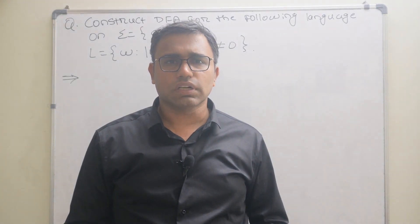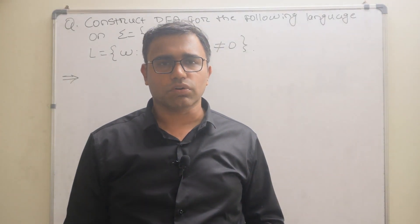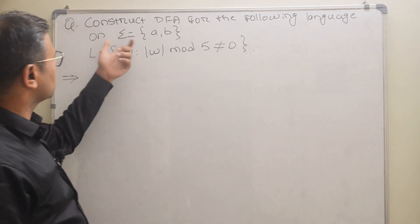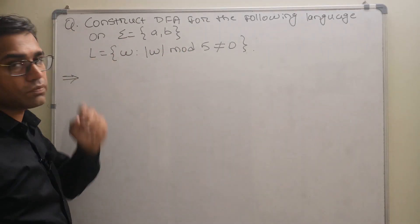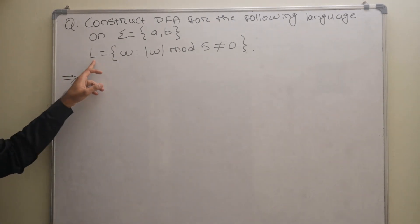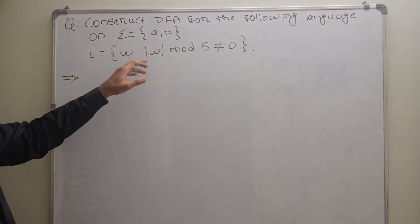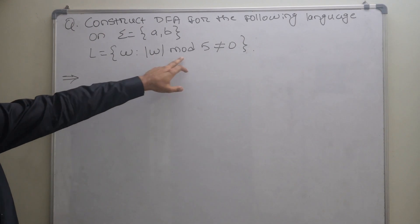Hello friends, in this video we will see the construction of deterministic finite automata. The question is: construct a deterministic finite automata for the following language on input symbols a, b, where the language is L = {w | |w| mod 5 ≠ 0}.